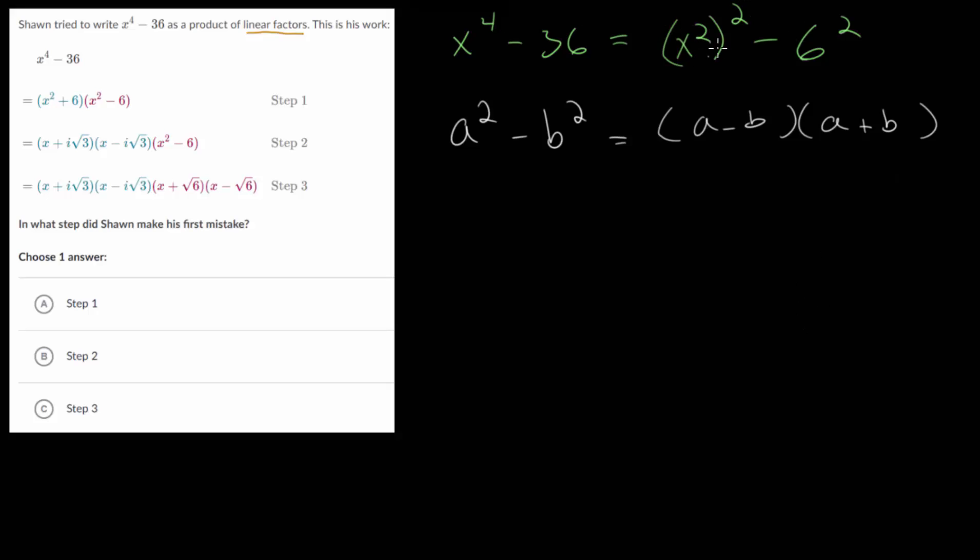So when comparing this to our expression, we can see that a is x squared and b is six. So we can rewrite this as x squared minus six—it's the first one ignoring the square minus the second one ignoring the square—and then we multiply that by the first one plus the second one, again ignoring the squares.